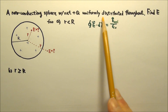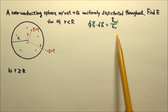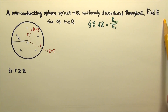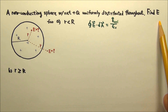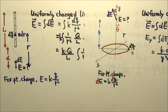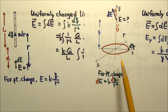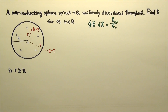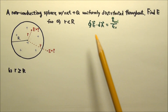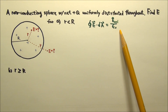Another application of Gauss's law is for finding the electric field produced by a highly symmetric charge distribution. You may ask, don't we already have Coulomb's law to find the electric field produced by a charge distribution? Why do we need another law? Because in certain highly symmetric situations, Gauss's law can make things a lot easier.